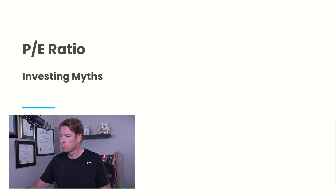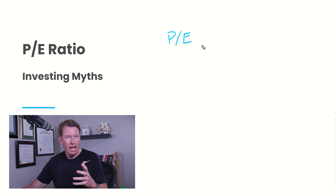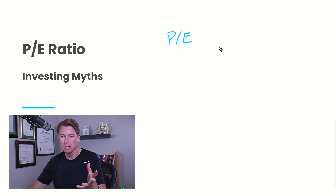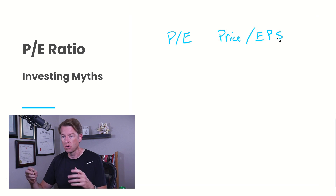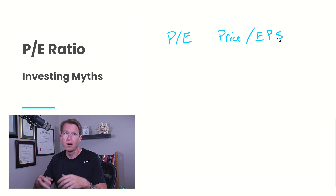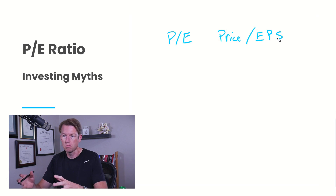Let's do a little bit of definitions first. The P.E. is an abbreviation. It stands for price — meaning the share price — versus earnings per share, which I'll abbreviate as EPS. Earnings per share, profits per share, net income per share — it's all the same thing.